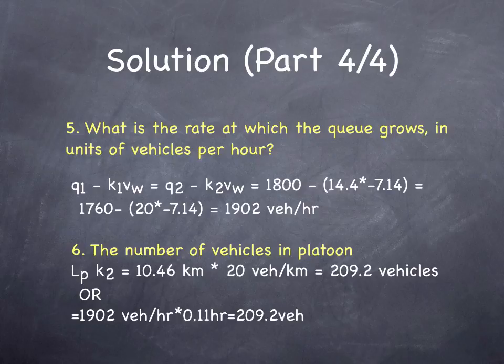We can calculate the number of vehicles in the platoon as the length of the platoon times the density. If we know that the platoon was 10.46 kilometers long, the density in the platoon was 20 vehicles per kilometer, 10.46 times 20 is 209.2. Not coincidentally, this equals 1902 times 0.11 hours.